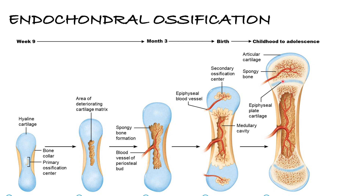When this plate fuses, that marks the end of growth. At the ends of your long bones, you have cartilage that prevents bones from rubbing against each other. When people talk about arthritis, it's usually when you no longer have cartilage in that joint — the bones rub against each other, and with nerves passing through that area, it becomes very painful.